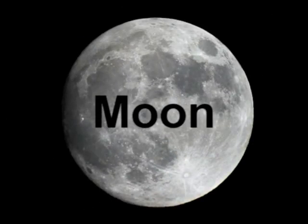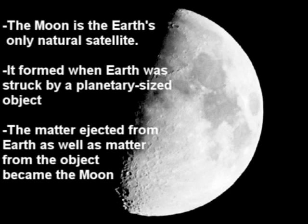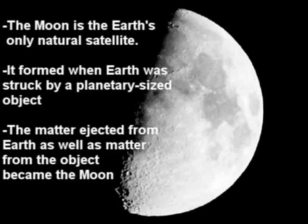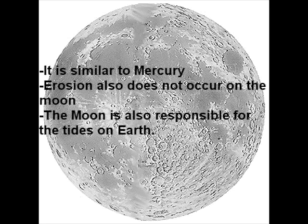The moon is the Earth's only natural satellite. It was said to be formed during the formation of the planets when Earth was struck by a planetary-sized object. The matter ejected from Earth as well as matter from the object became the moon. It is similar to Mercury in that it lacks an atmosphere. Erosion also does not occur on the moon, leaving marks and imprints on the surface intact. The moon is also responsible for the tides on Earth.